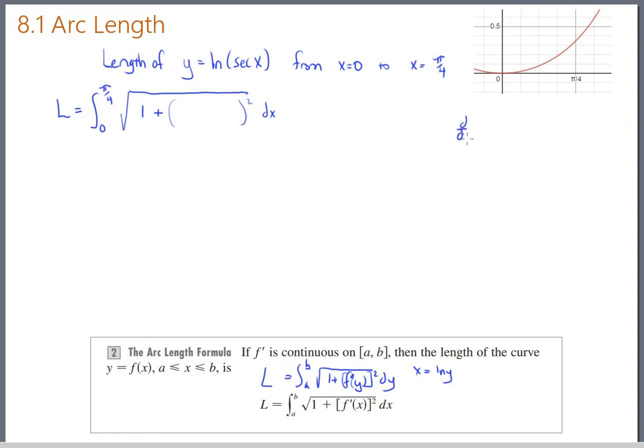So over here on this side, go back to calc 1. What is the derivative of natural log of secant of x? That's chain rule, right? The derivative of natural log of anything is 1 over that thing, and then times the derivative of that thing. So the derivative of secant is secant tangent. Just in case it's been a little while since you have done your derivatives.